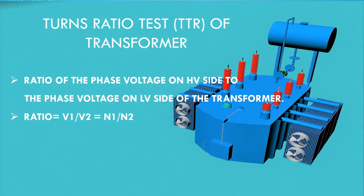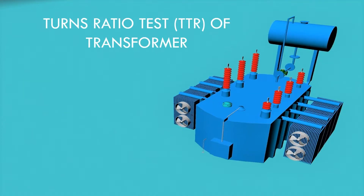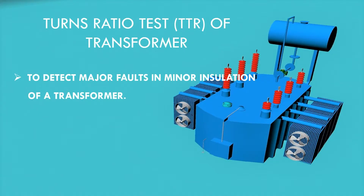Alternatively, TTR is also equal to N1 divided by N2, where N1 is the number of turns on the primary side of the transformer and N2 is the number of turns on the secondary side. TTR is basically carried out to detect major faults in the minor insulation of a transformer.